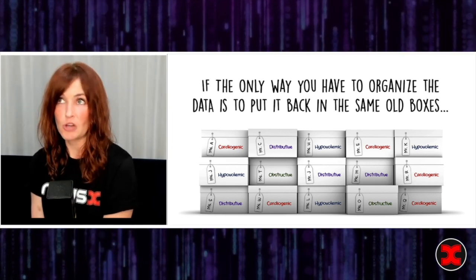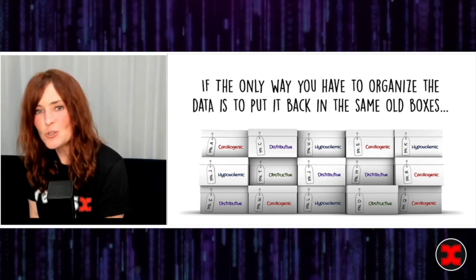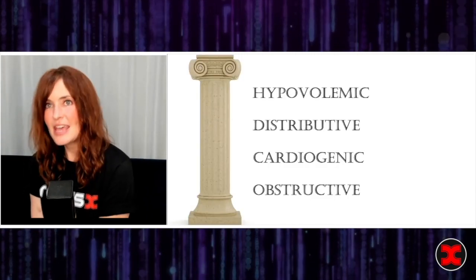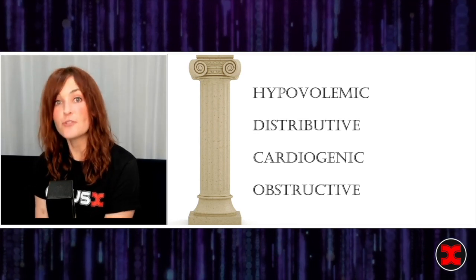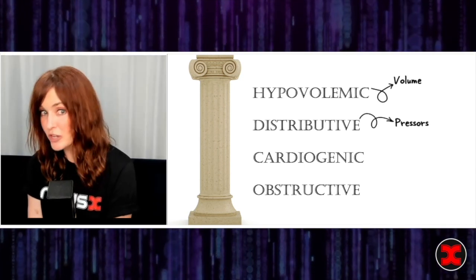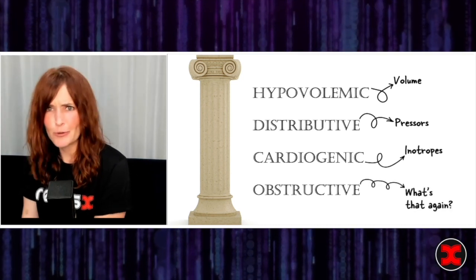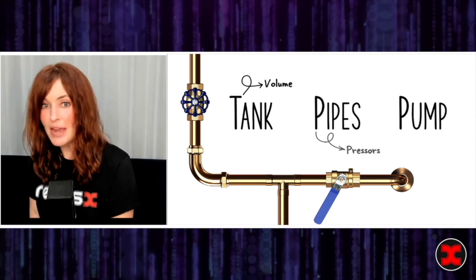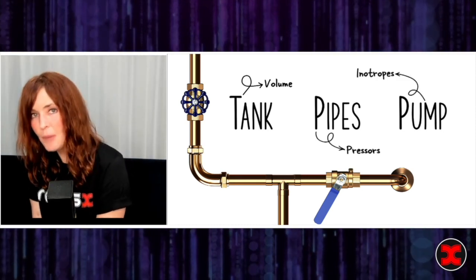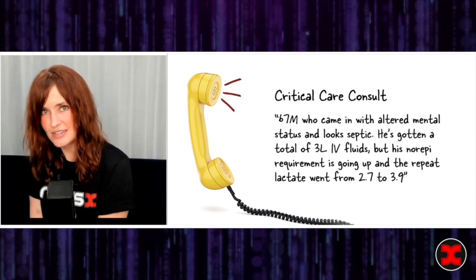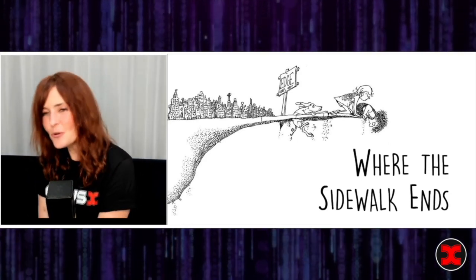Having an organized ultrasound approach to shock is good, but it doesn't get you all the way there, because ultimately you're just taking the data and putting it back in the same old boxes. The biggest problem with these boxes is they lead to a very limited view of treatment: hypovolemic shock — give volume; distributive shock — give pressors; cardiogenic shock — give inotropes. Similarly, with the ultrasound model: tank problem — give volume; pipes problem — give pressors; pump problem — give inotropes. None of that helped me with this patient. We often end up feeling: I've done all the things, but now what?